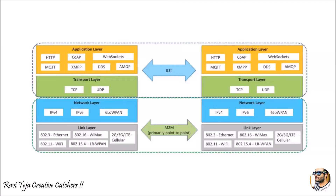At the link layer, M2M uses Ethernet, Wi-Fi, or 2G/3G cellular protocols. The network layer uses IPv4, IPv6, and 6LoWPAN. For IoT, popularly used protocols at the M2M equivalent layer include Zigbee and Bluetooth, which perform their tasks according to the respective layers.